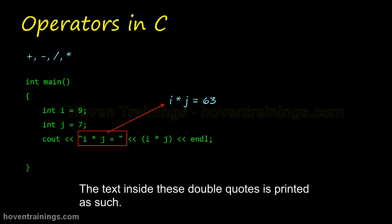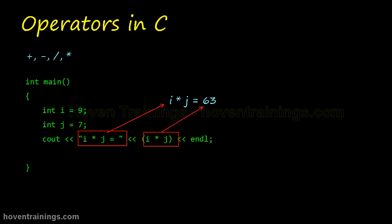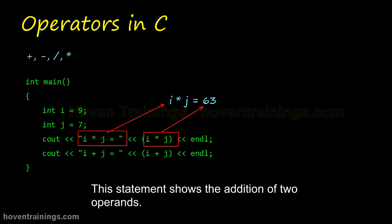The text inside these double quotes is printed as such. This expression is evaluated and printed as 63. This statement shows the addition of two operands. The output will be I plus J equals 16.